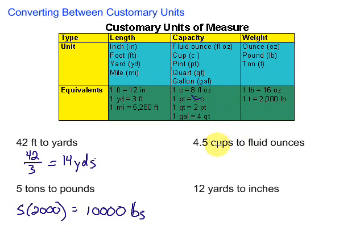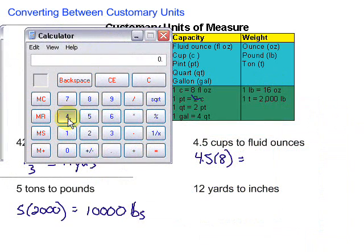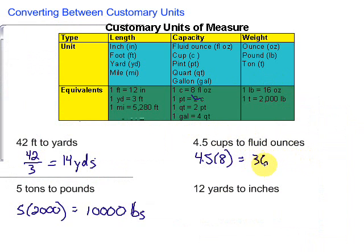So this one, we're dealing with capacity because we have cups. Cups are a larger unit than ounces, so we're going to multiply. We multiply 4.5 by 8 to figure out the number of fluid ounces. 4.5 times 8 gives us 36. So 4.5 cups is 36 fluid ounces.